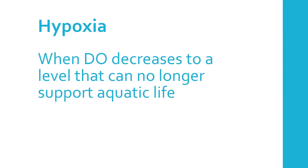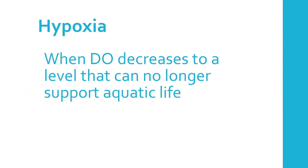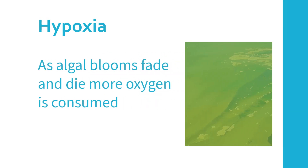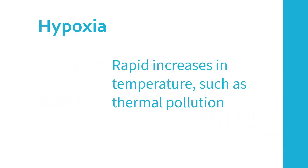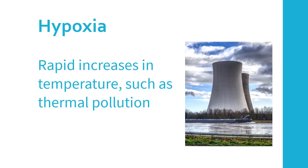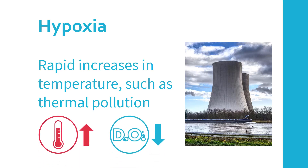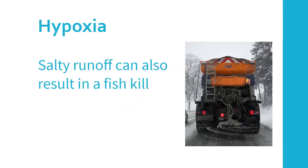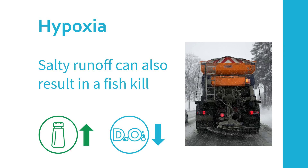Hypoxia occurs when DO decreases to a level that can no longer support aquatic life. As algal blooms fade and die, more oxygen can be consumed and DO levels will drop. Rapid increases in temperature, such as thermal pollution, can also cause hypoxia. As temperature increases, the level of DO in water decreases. Salty runoff can also result in a fish kill because DO levels will decrease as salinity increases.